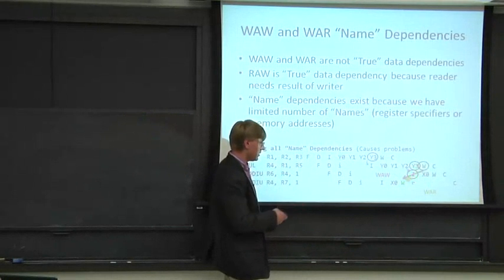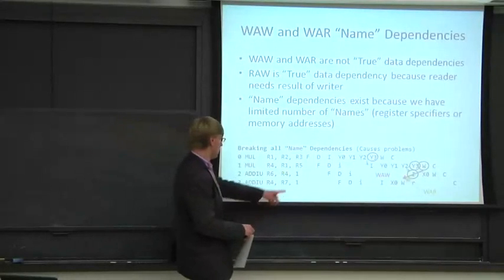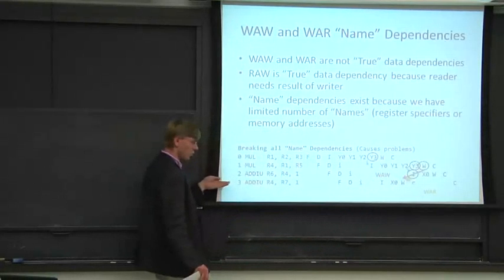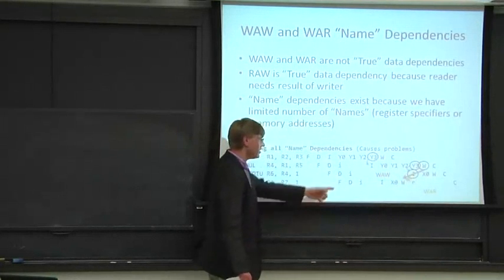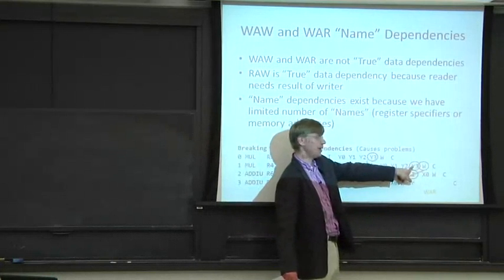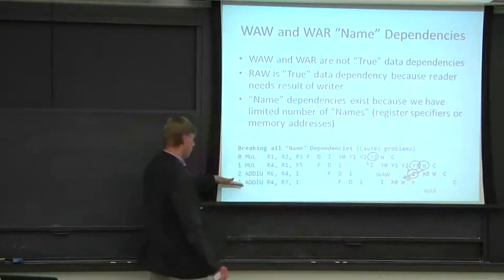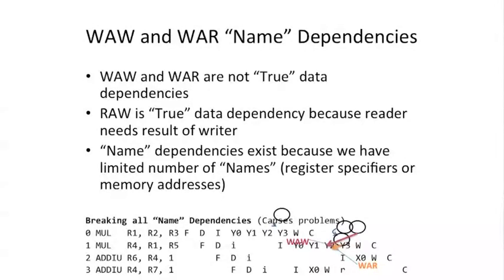The other one is a write-after-read dependence. Here we have a read of register four, and here we have a write of register four. Because this add got pulled so early in the execution order, we actually wrote before this instruction had a chance to read the value. The reason this instruction got delayed was because it was dependent on a true dependency. But all of a sudden, we wrote register four with the value from this add, and then we went and read it and read the wrong value. So we can't just go and break write-after-write and write-after-read dependencies easily — we need to think a little bit harder about this.